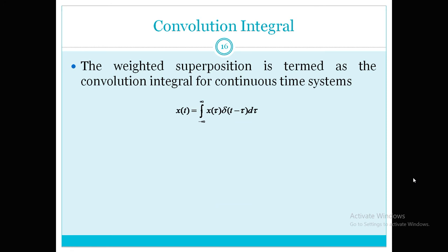x(t) is equal to the integral from minus infinity to infinity of x(τ) δ(t − τ) dτ. This simple equation represents the input signal in terms of shifted impulses. Now we need to use this impulse response for the output of the system.